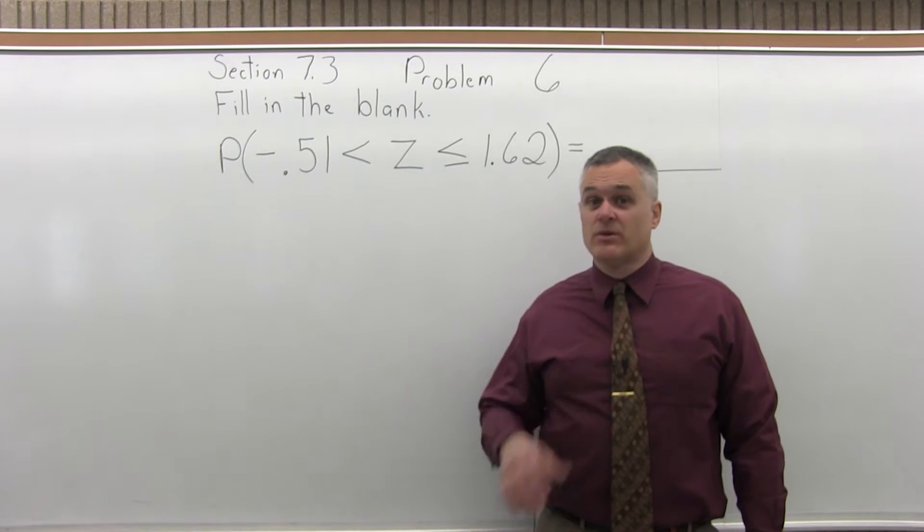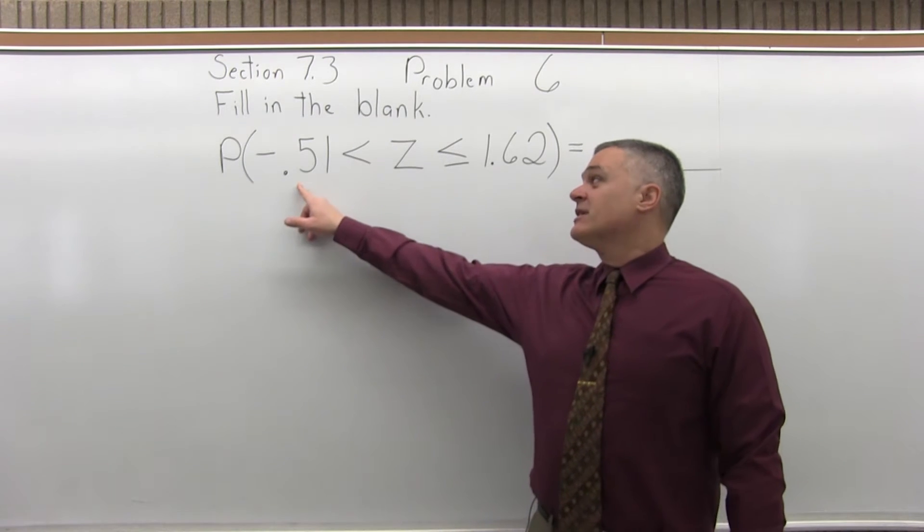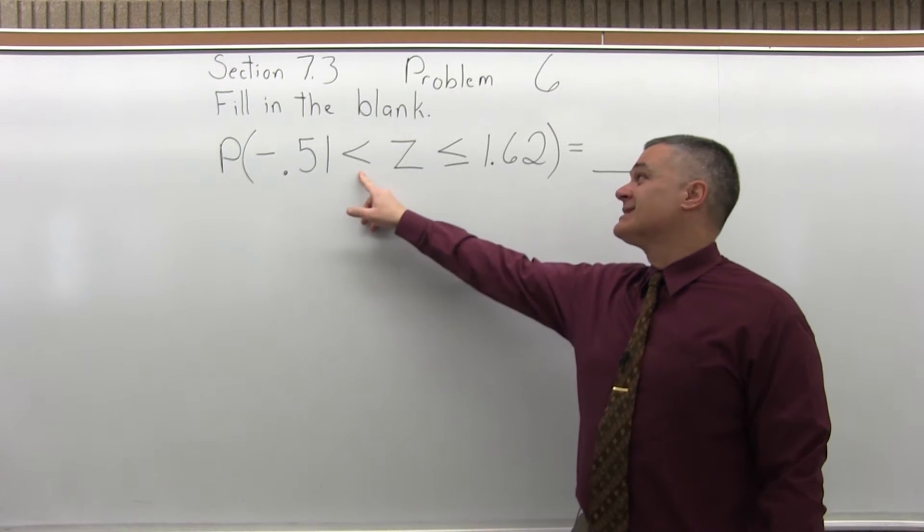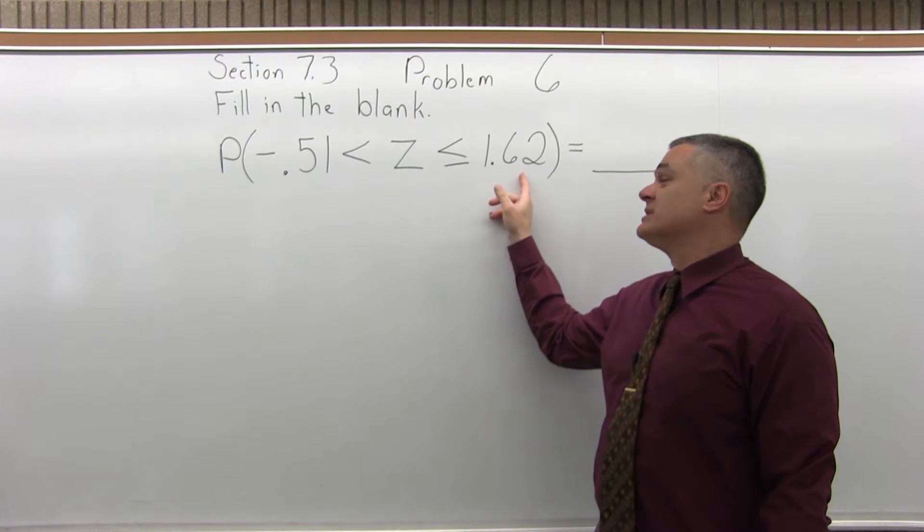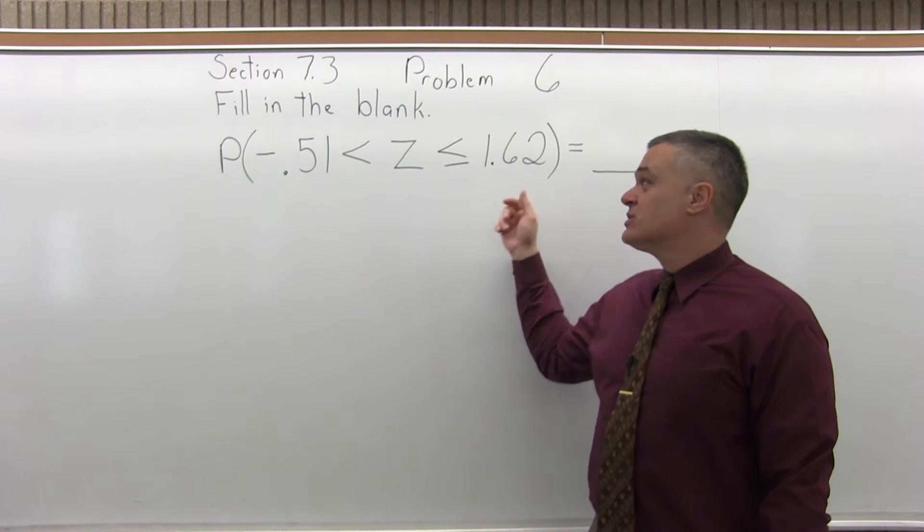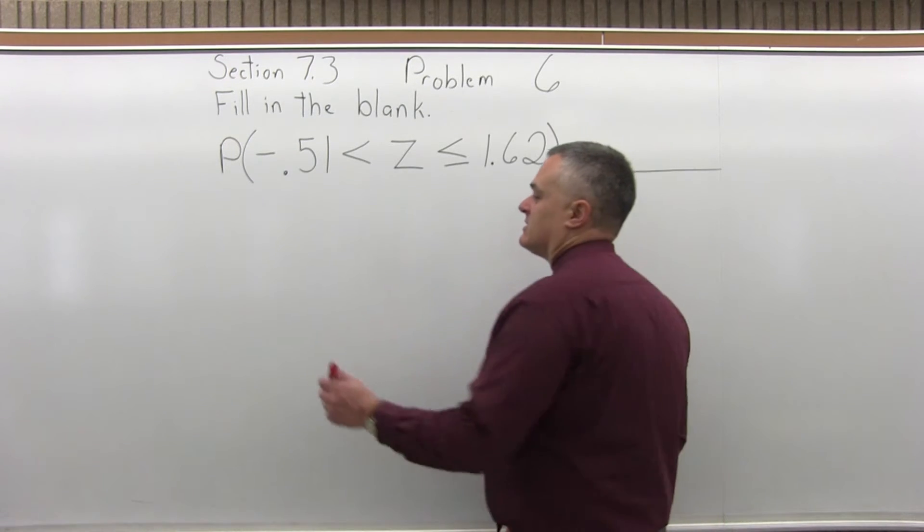This is Section 7.3, Problem number 6. It says fill in the blank: the probability that -0.51 is less than Z is less than or equal to positive 1.62 equals blank. In other words, what's the probability that Z is between -0.51 and positive 1.62?